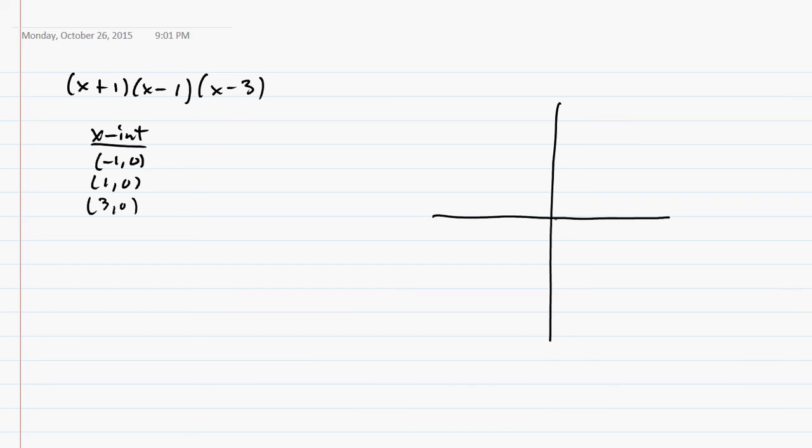And then we can put those on the graph here, (-1, 0), (1, 0), 2, and (3, 0). So already we know we're going to have this kind of snake going up this way, or it might be going down this way. Okay, so let's keep going and see which one it would be. Before the y-intercept, why don't we expand?